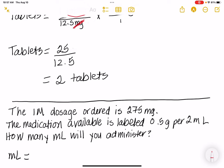And the IM dosage ordered is 275 milligrams. The medication we have available is 0.5 grams in two milliliters. And your question comes how many milliliters will you administer?